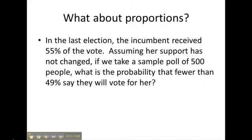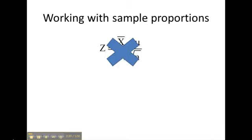Let's take a look at a problem. In the last election, the incumbent received 55% of the vote. Now, assuming her support has not changed, if we take a sample poll of 500 people, what is the probability that fewer than 49% say they will vote for her? You just can't fit these numbers into the old formula. It just doesn't work.